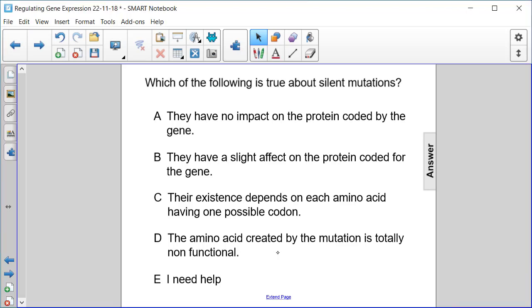So what makes a mutation silent is that a single point mutation doesn't result in a different amino acid being coded, and therefore they have no impact on the protein coded by the gene.